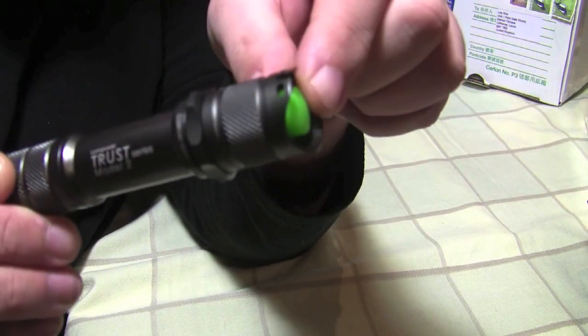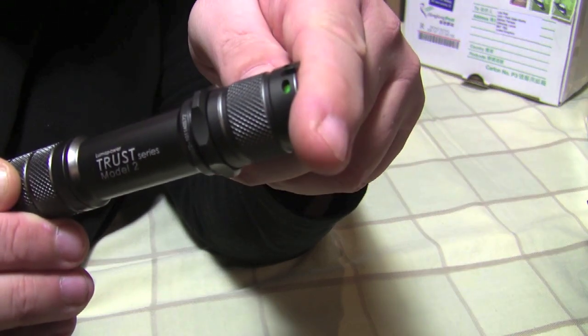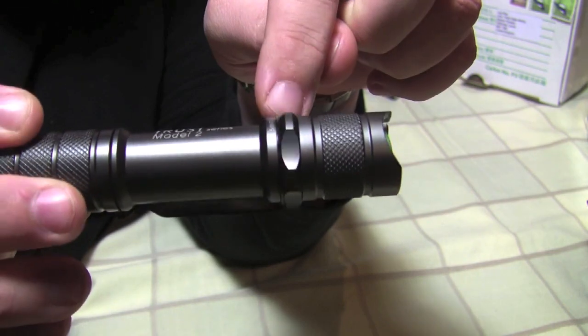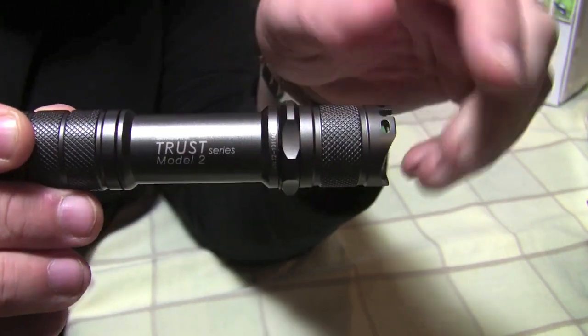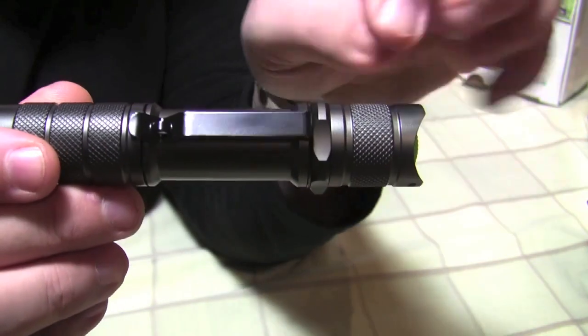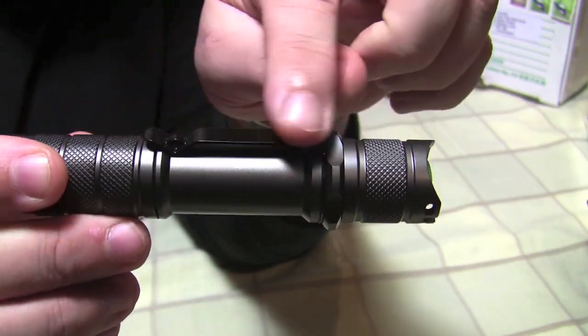There are recesses in here to make it more comfortable for a thumb press. Then we have the anti-roll bezel here and at this side we have the pressed steel clip.